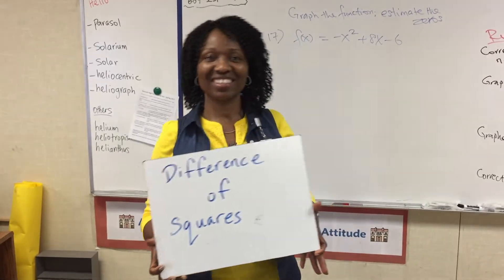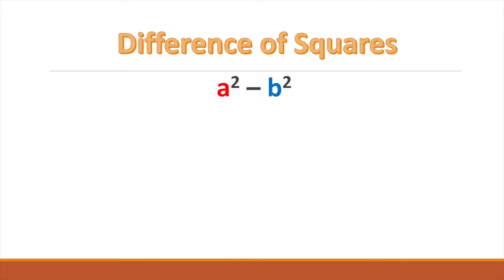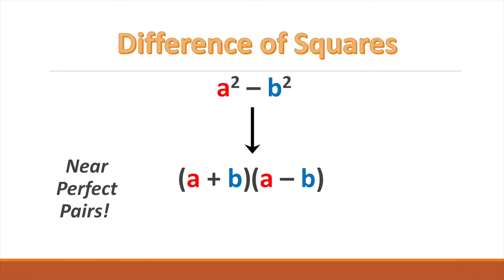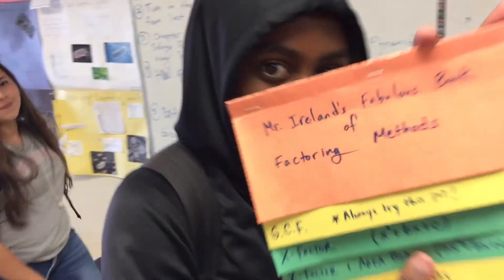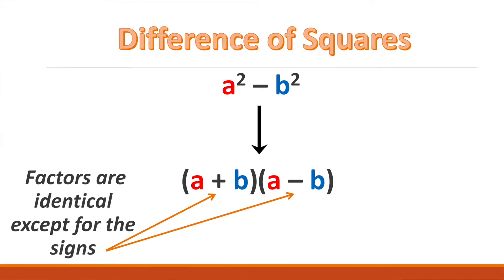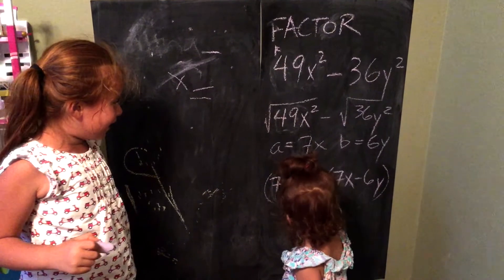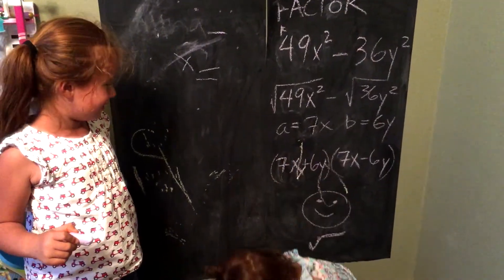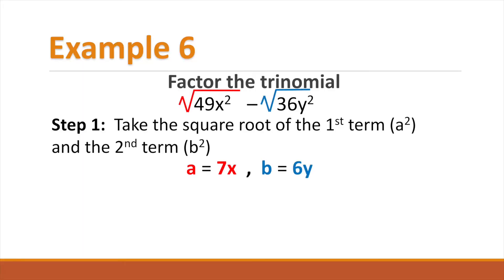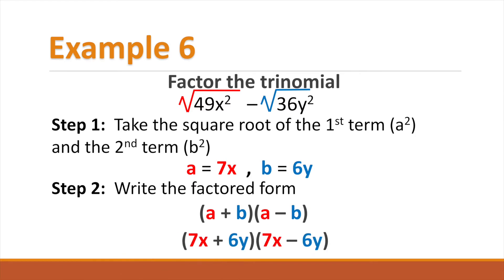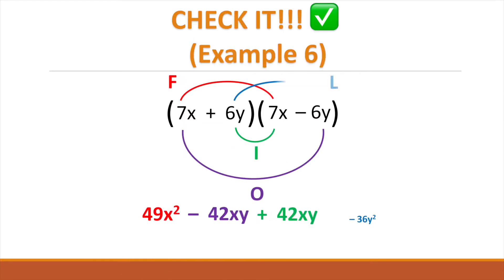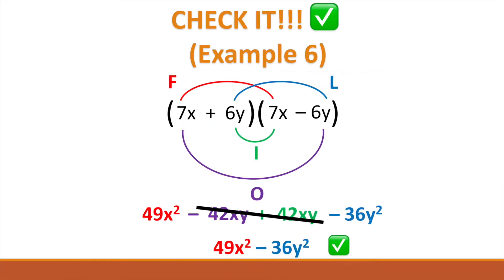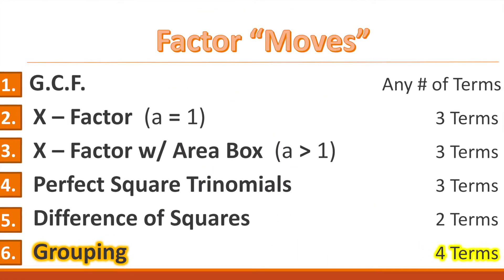Let's keep it moving to the difference of squares. a squared minus b squared, producing near perfect pairs. The only difference is in the plus and minus — method so simple. Square root the first and second term, write your opposite factors, you can FOIL to confirm.